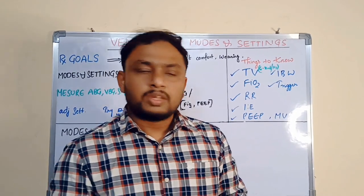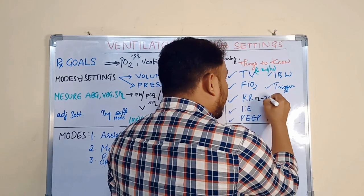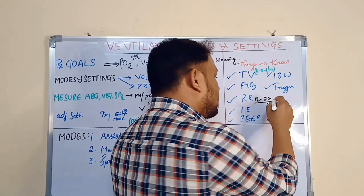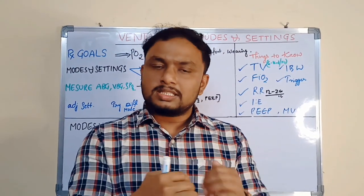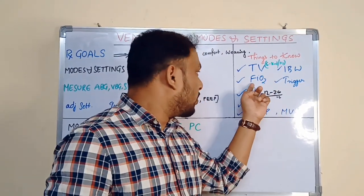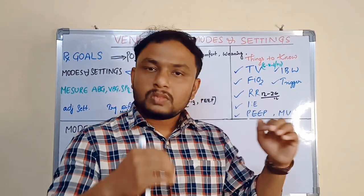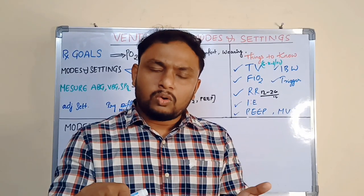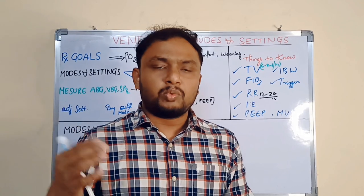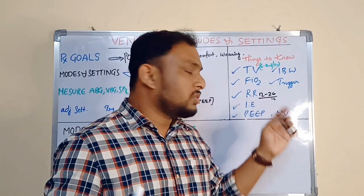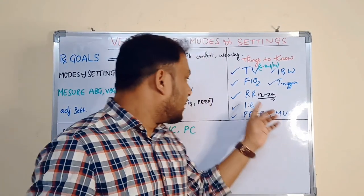Respiratory rate should be maintained between 12 to 20 — usually 12 to 18, you can say. In some cases, depending on the clinical condition, you need to adjust the respiratory rate, FiO2, and tidal volumes. In some cases you need to maintain a lower respiratory rate. In some extreme conditions like COVID pneumonia and ARDS, you need to set a high rate — around 18 to 20.